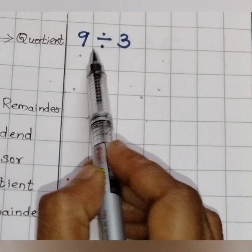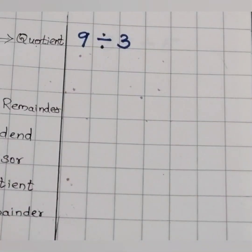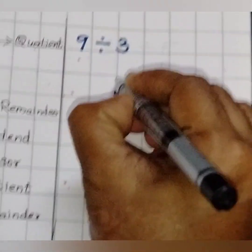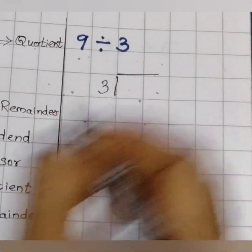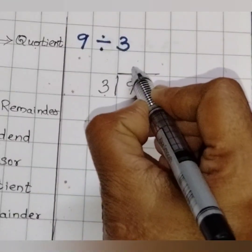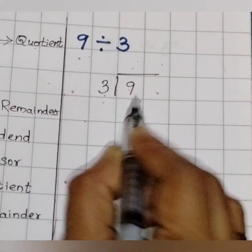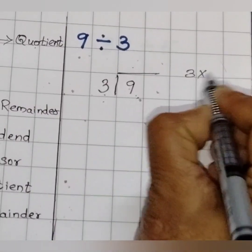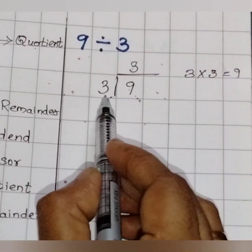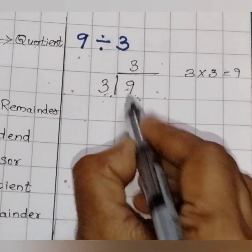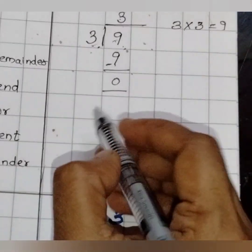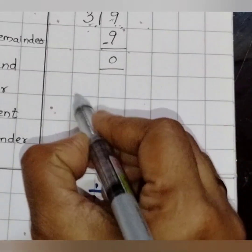Now let us move to the next question: 9 divide by 3. Using the 3 table we have to divide 9. I am writing the small number outside and the big number 9 inside. Now let us check in the 3 table when 9 comes. 3 threes are 9. 9 minus 9 is 0. Answer is 3.